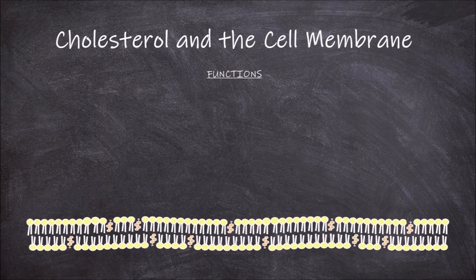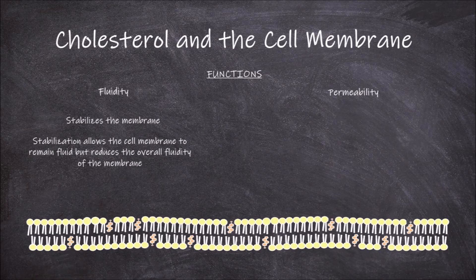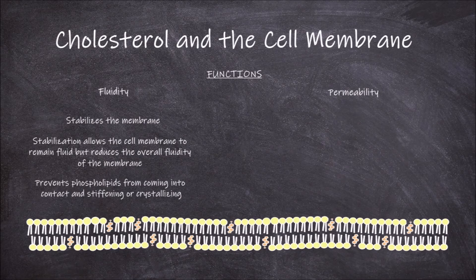These cholesterol molecules function in both regulating the fluidity of the cell membrane as well as regulating the permeability of the cell membrane. The location of cholesterol between phospholipids helps stabilize the membrane, giving it additional support in the absence of a cell wall. This stabilization allows the cell membrane to remain fluid but reduces the overall fluidity. In addition, the presence of cholesterol between the phospholipids prevents the phospholipids from coming into contact, which prevents them from stiffening or crystallizing.